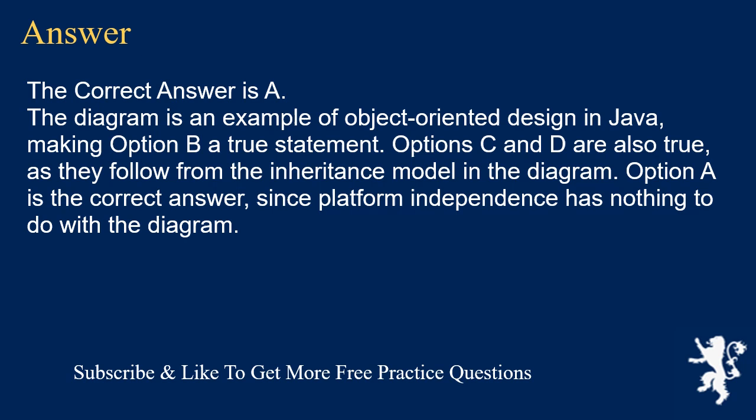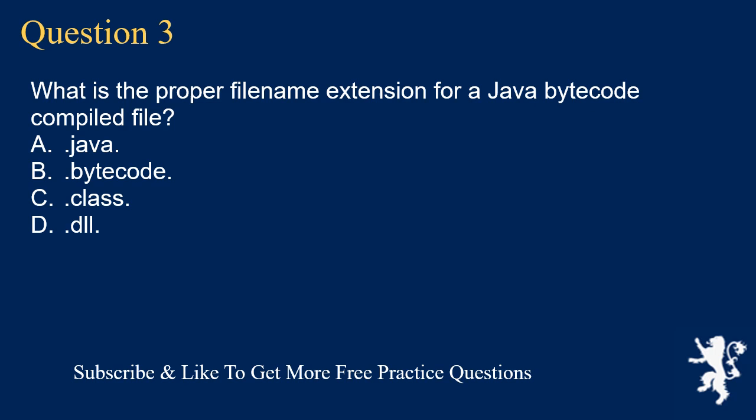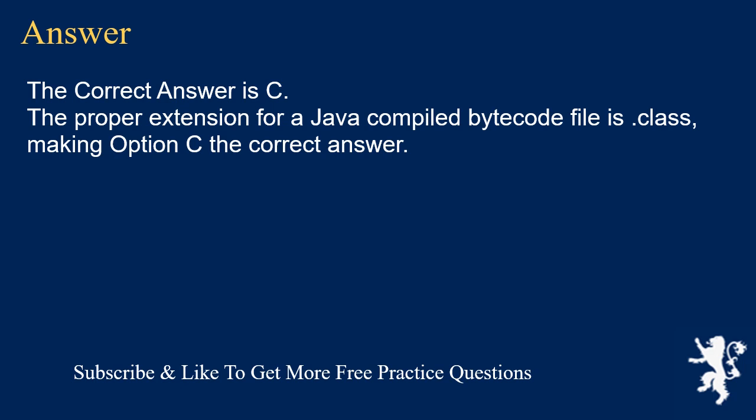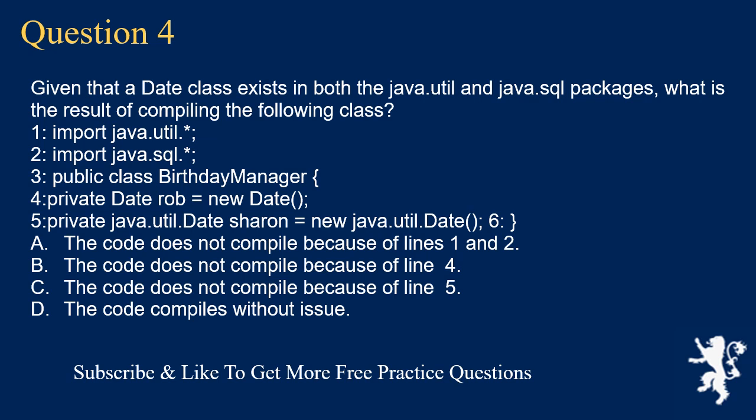Question 3: What is the proper file name extension for a Java bytecode compiled file? A) .java, B) .bytecode, C) .class, D) .dll. The correct answer is C. The proper extension for a Java compiled bytecode file is .class, making option C the correct answer.